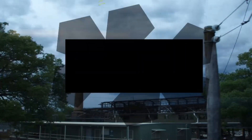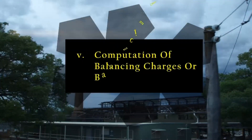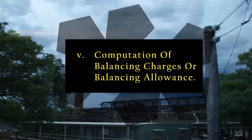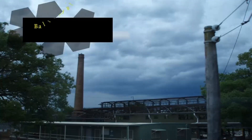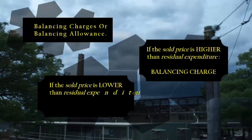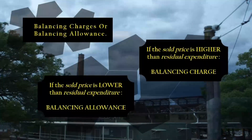Where the interest depends on the duration of a concession, the coming to end of the concession. Computation of balancing charges or balancing allowance: if the sale price is higher than residual expenditure, it is a balancing charge; if the sale price is lower than residual expenditure, it is a balancing allowance.